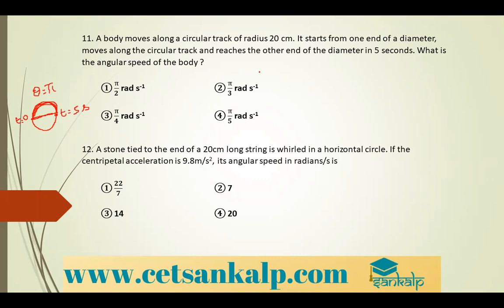Using the formula omega equals theta divided by t, where omega is the angular speed and theta is the angular displacement. Theta is π and time is five seconds, so omega equals π/5 radian per second. That is option 4.